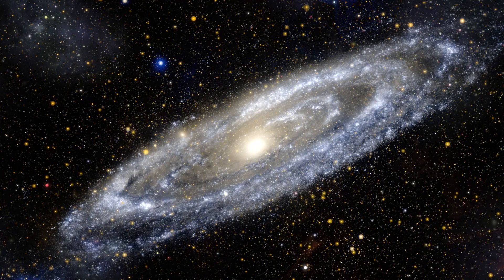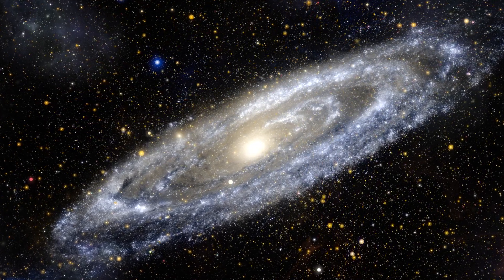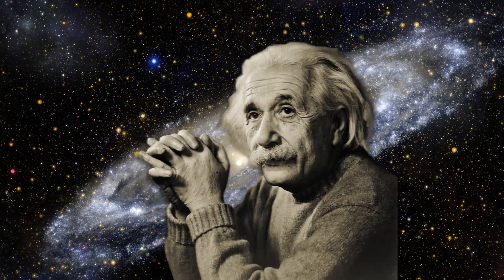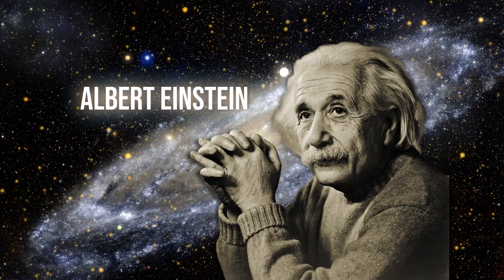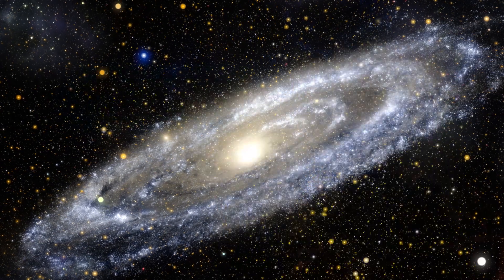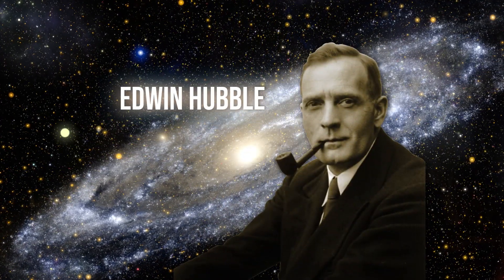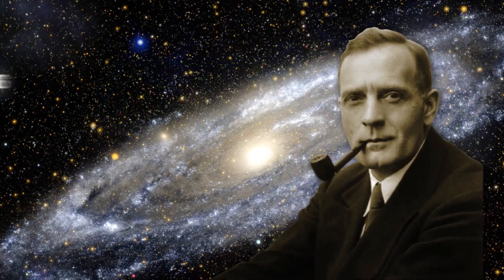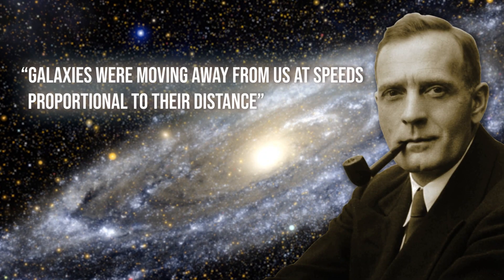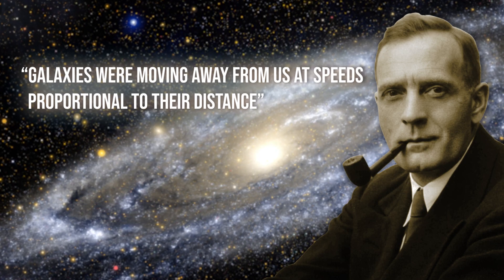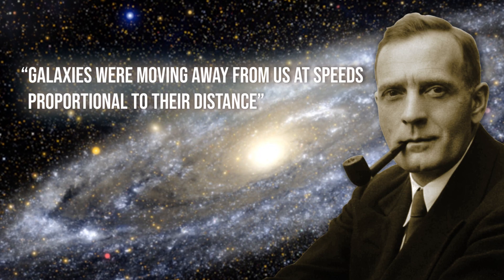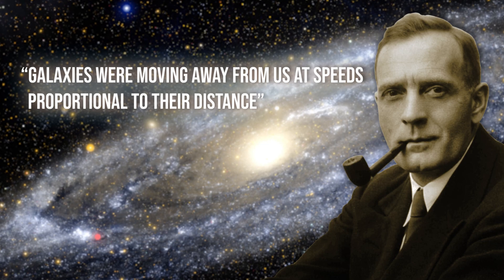At the time, many scientists rejected Lemaître's theory, including Albert Einstein, who believed in a static universe. However, in 1929, astronomer Edwin Hubble provided strong evidence for the expanding universe when he observed that galaxies were moving away from us at speeds proportional to their distance. This became known as Hubble's law and has since become one of the cornerstones of modern cosmology.